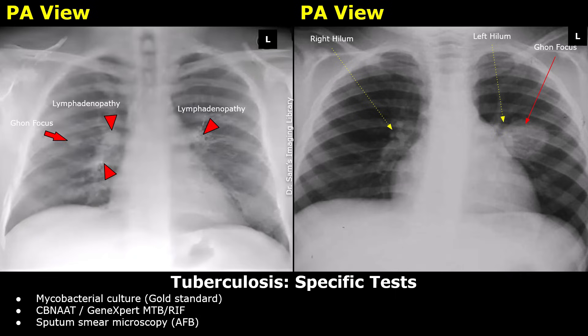But first we will look at the tests — sputum tests — which are specific for pulmonary tuberculosis. It is very important to correlate the X-ray and other imaging findings with lab tests and microbiological tests for a correct diagnosis. In suspected tuberculosis, sputum smear microscopy, CBNAAT, and mycobacterial culture are the key microbiological investigations.